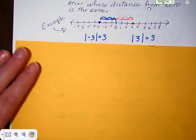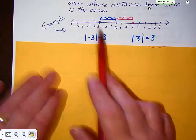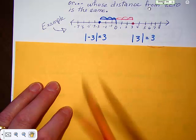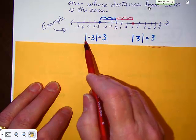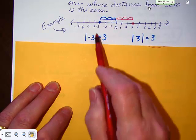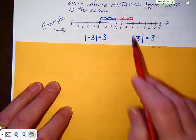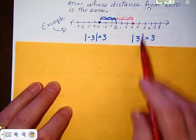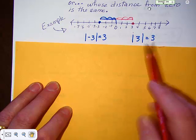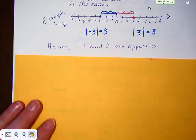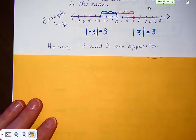Here's another example — same concept but drawn out a bit nicer. The absolute value of negative 3 is equal to 3. If you look at the blue: 1, 2, 3. The absolute value of 3 is also equal to 3 — 1, 2, 3 units. That's a good thing to put in your notes. Hence, negative 3 and 3 are opposites.